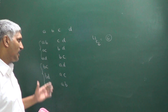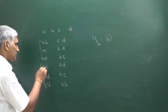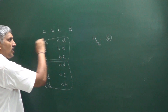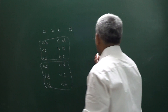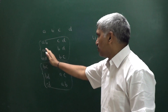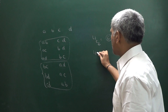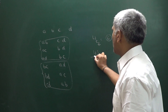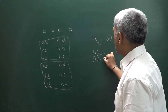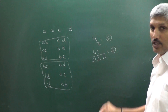When equal items are there, it affects the count. Total we got 6, but the actual answer is 3 only. These 3 and these 3 are the same. That's why we have to divide. Because there are 2 identical groups, we divide by 2 factorial. This can be written as 4 factorial divided by 2 factorial into 2 factorial, divided by 2 factorial, which gives 3 possibilities only.